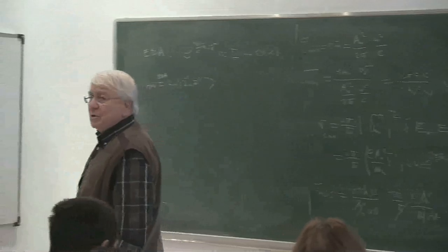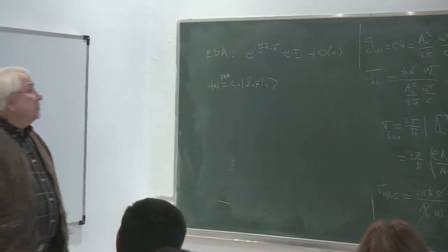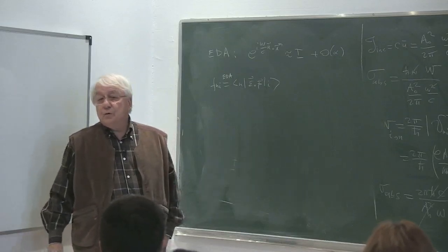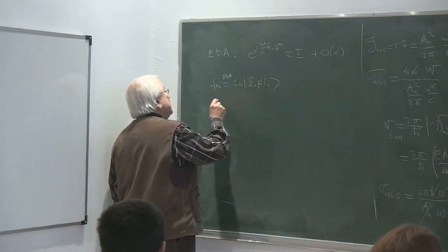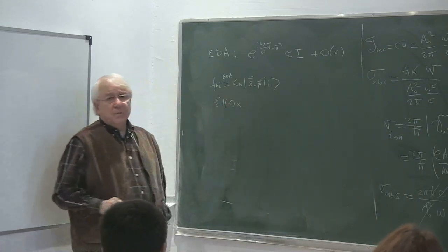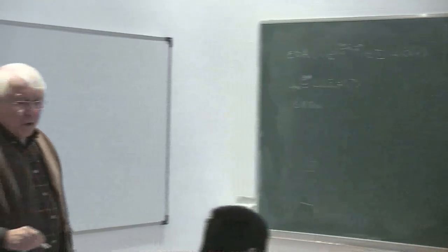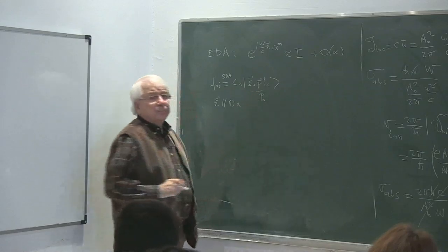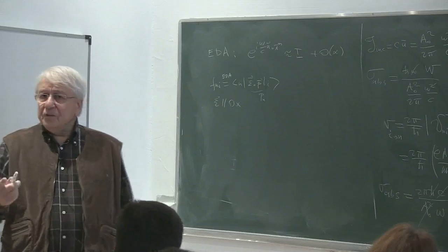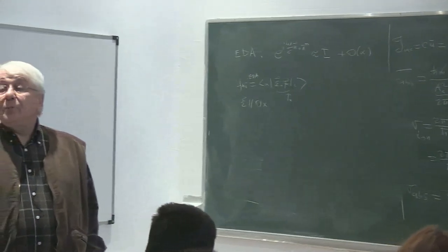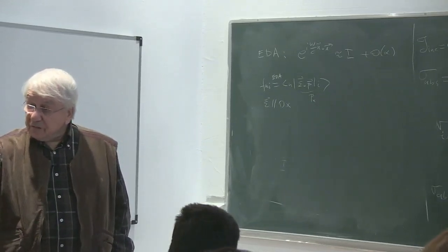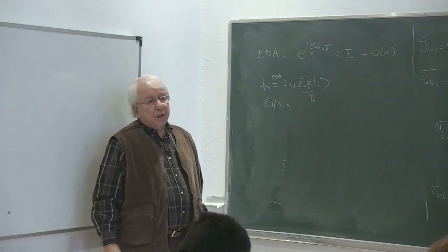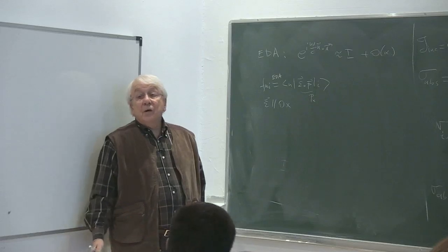p is the gradient operator, so epsilon·p — computing the expectation values of a gradient operator is complicated. So you may wish to move from p to x. How do you do that? First of all, choose epsilon, the polarization, to be parallel to the x-axis. Without losing generality, it doesn't do any harm. So this becomes just p_x, because polarization is provided by the external agent; you define your x-axis to be parallel to the given external polarization.